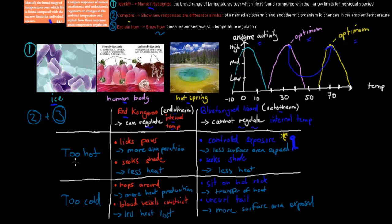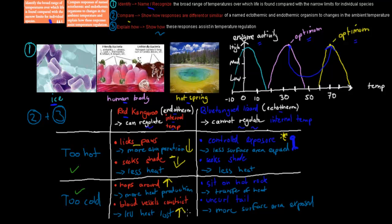For the red kangaroo, when it's too hot it will lick its paws — this increases evaporation of saliva on the paws, causing more cooling below the skin, bringing temperature down. It can also seek shade to reduce heat gain. When it's too cold, it will hop around so that muscles produce more heat, bringing temperature back up. It can also constrict its blood vessels, which reduces heat lost to the arms and legs and helps conserve heat.